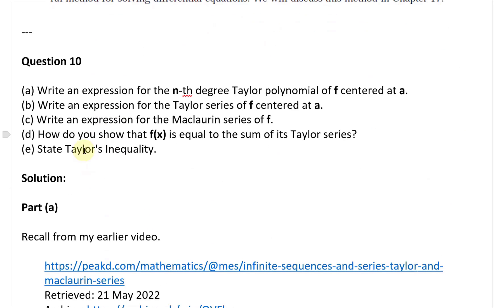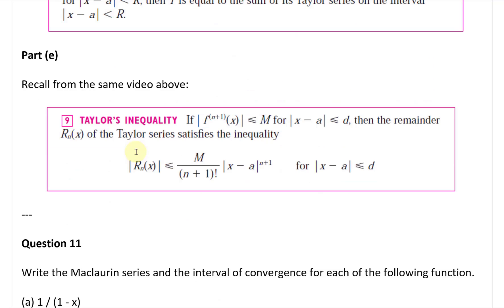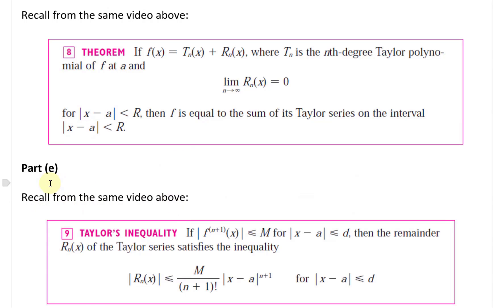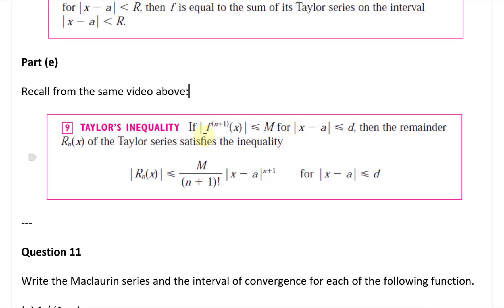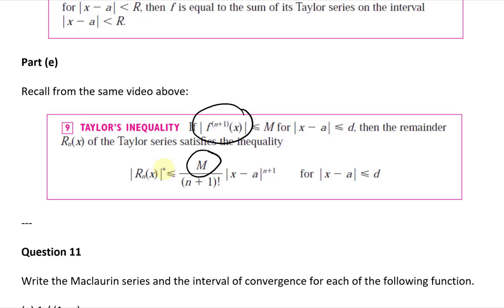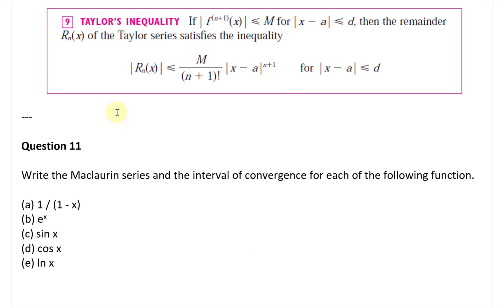For part E, state Taylor's inequality. Taylor's inequality says: if the absolute value of the n plus 1 derivative of F at X is less than or equal to capital M for the absolute value of X minus A less than or equal to D, then the remainder R sub N of X satisfies: the absolute value of R sub N of X is less than or equal to M divided by n plus 1 factorial, times x minus A to the power of n plus 1, for all X with absolute value of X minus A less than or equal to D. The proof of this inequality was covered in the earlier video.